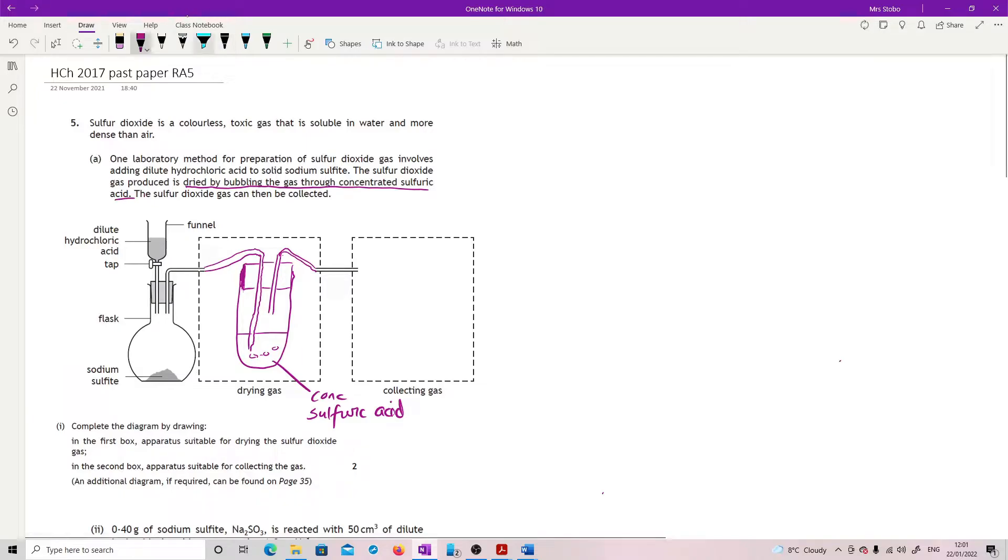The collecting gas, you have to be careful because you might automatically think, I'll just do downward displacement of water, however it does tell you up here, soluble in water, and that it's more dense than air. So we have two options. I think the easiest option, genuinely, is to go with a gas syringe.